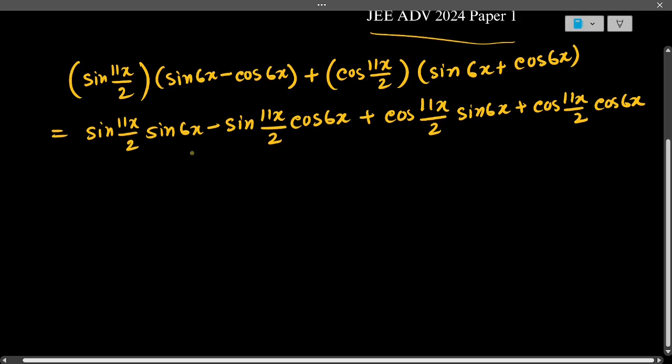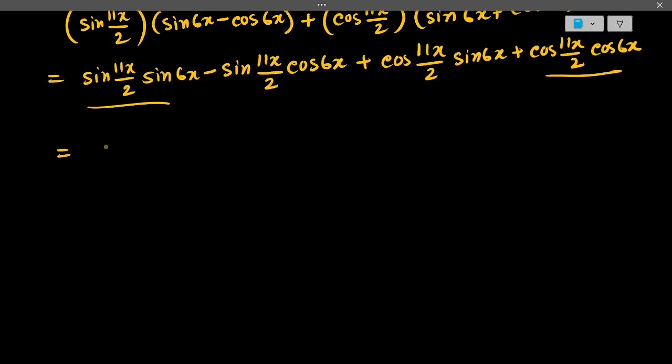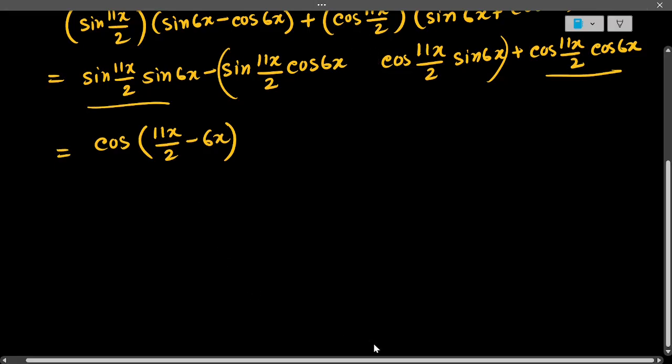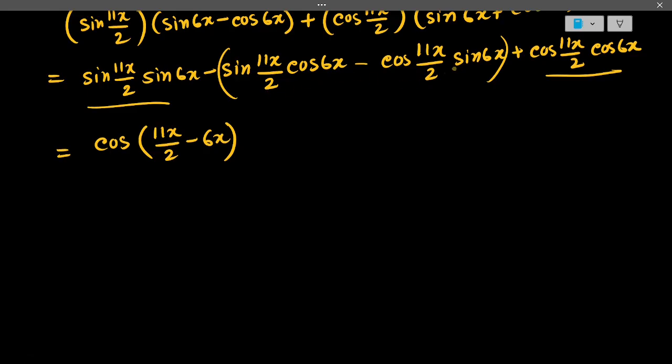Now see these two terms. If we apply that, it will be cos, and if we take minus one common from these two terms it will be minus. This is sin a cos b - cos a sin b which equals sin(a - b). So it will be sin(11x/2 - 6x).